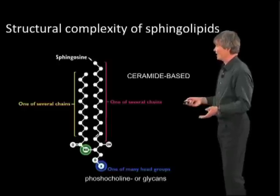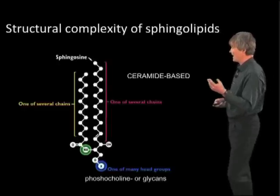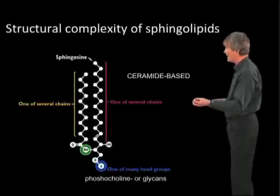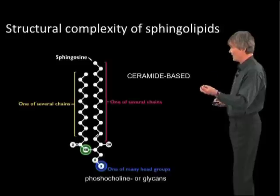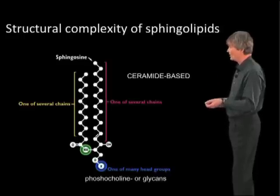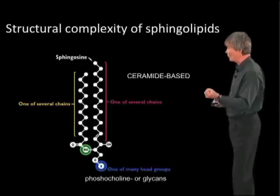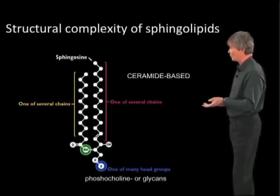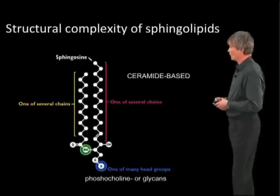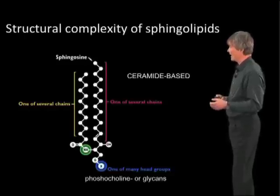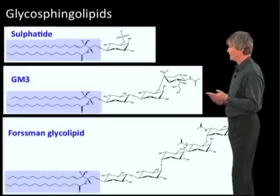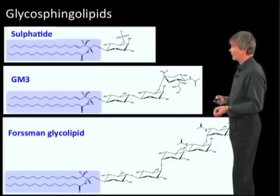The sphingolipids are also complex. They are not based on glycerol — they are ceramide based. We have a sphingosine with a fatty acid amide-bonded to the sphingosine; this is the ceramide, the hydrophobic backbone of these lipids. And then we have head groups like phosphocholine, as in the glycerolipids, but also many glycan head groups, like the sulfatide, the ganglioside GM3, or the Forsman glycolipid.